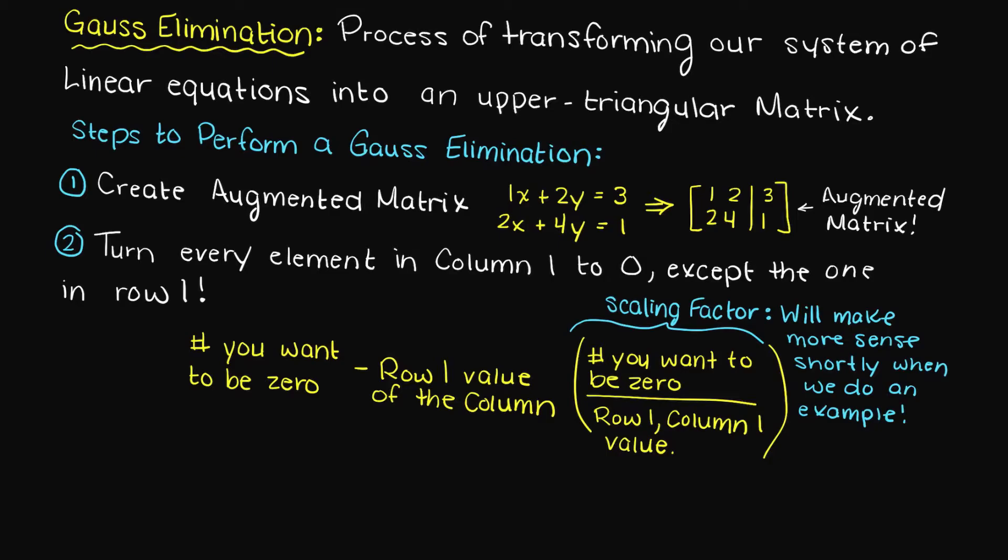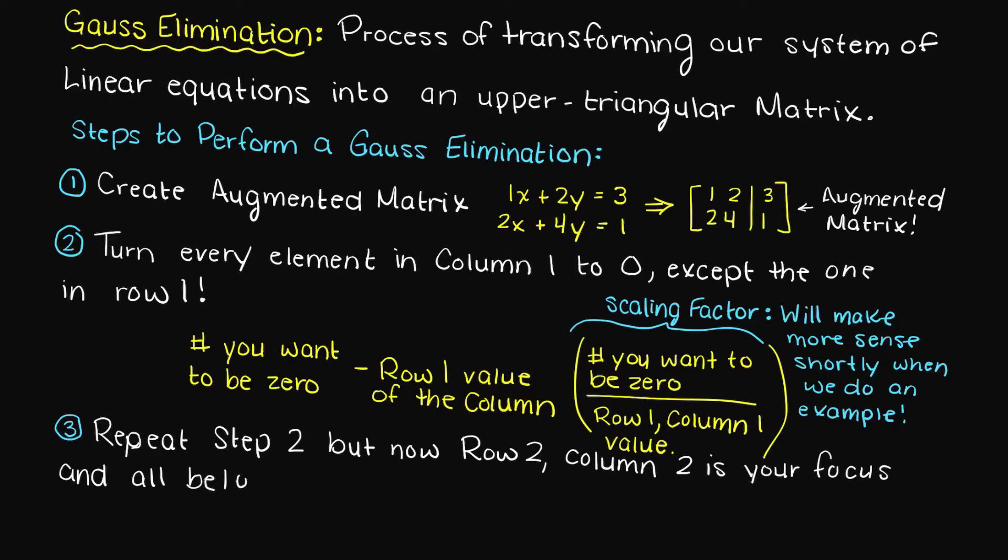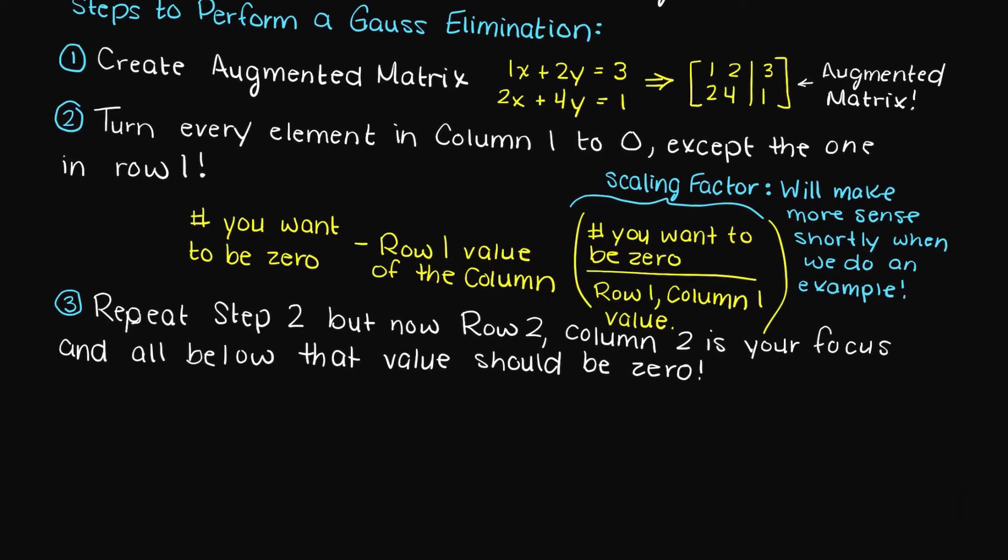So for us right now, this will be the term on the top left corner of our matrix. Step 3 is repeating the second step, but moving diagonally down right one every time. And we just repeat this until we only have one non-zero variable left in a given row.